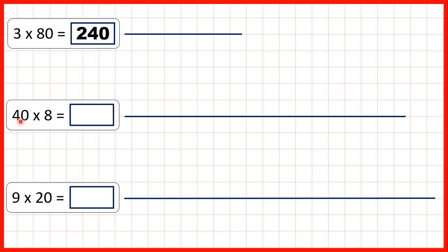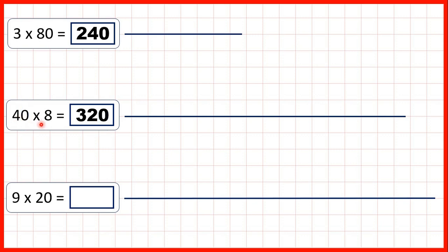Now, 40 times 8. We know that 4 times 8 is 32, and that means 40 times 8 must be 320 — so 32 with a zero on the end — because we have a zero in our multiplication question. If we know 4 times 8 is 32, we know 40 times 8 is 320.